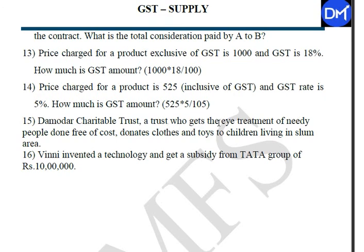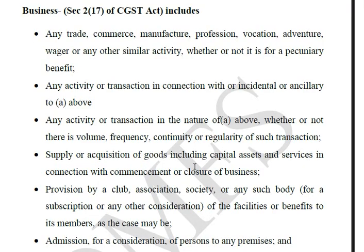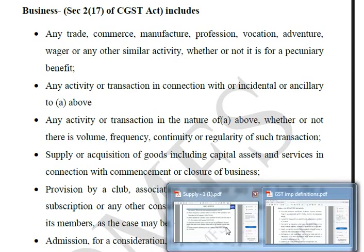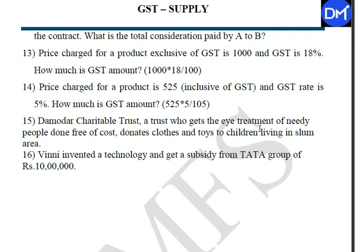A charitable trust provides free eye treatment to needy people and donates clothes and toys to children living in slum areas. The charitable trust provides these services free of cost — there is no consideration. Also, any activity carried out not for a pecuniary benefit is not a business. A charitable trust is not for a pecuniary benefit, so it is not for consideration, and therefore it is not a supply.